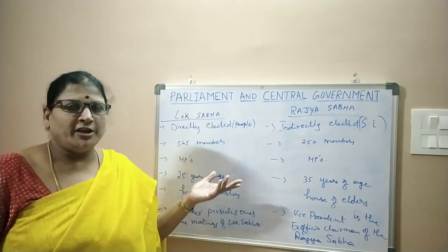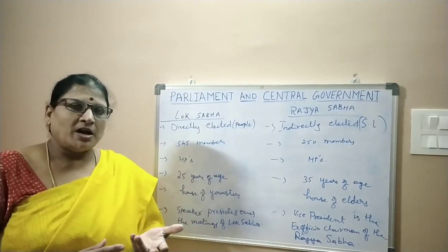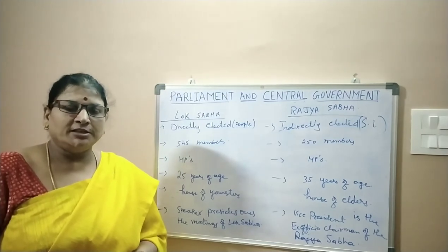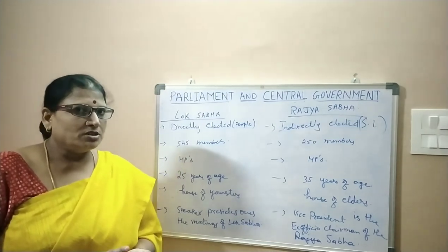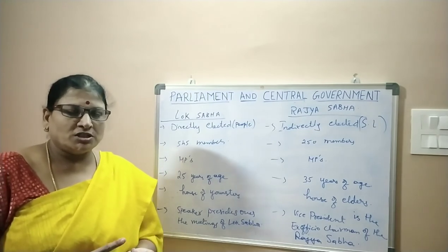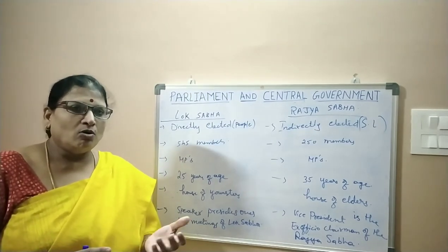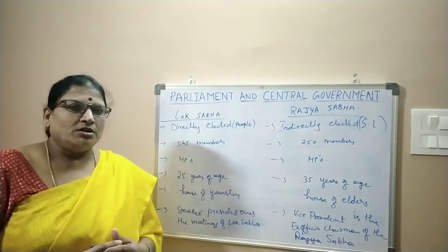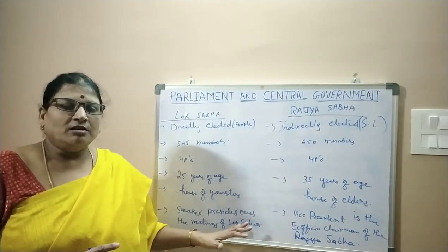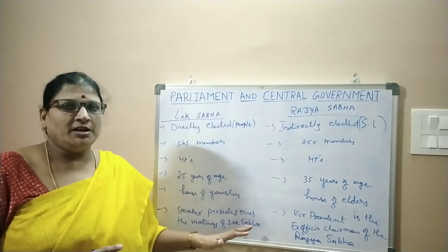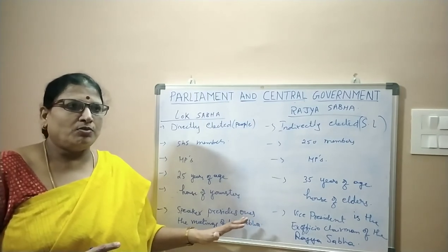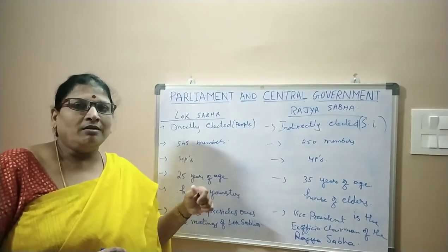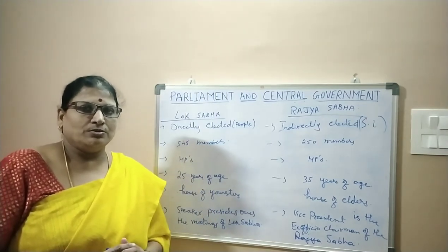To sum up, we have learnt about the parliamentary form of government, the constitution, and the members of Lok Sabha and Rajya Sabha — the two houses of the parliament — and how a bill becomes a law. This is very important information which you have to know and learn thoroughly. Thank you.